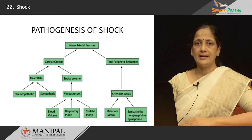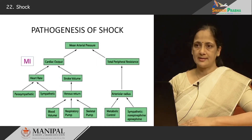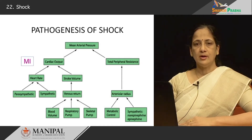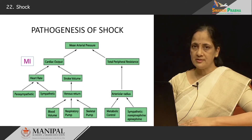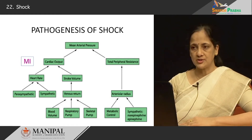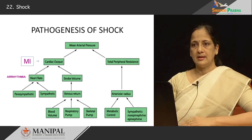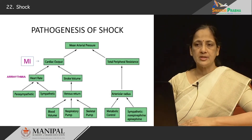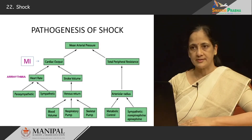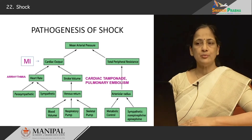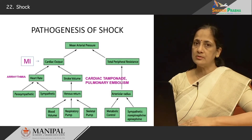How do these act in the pathogenic cascade? Myocardial infarction affects cardiac output, which affects arterial pressure, which affects blood flow, causing hypoperfusion of tissue with decreased oxygen supply. Arrhythmias alter the heart rate; a decreased heart rate decreases cardiac output and the same mechanism follows. Cardiac tamponade and pulmonary embolism affect the stroke volume — that is, the amount of blood pumped out of the heart at every stroke.